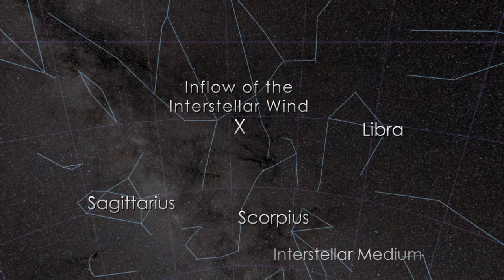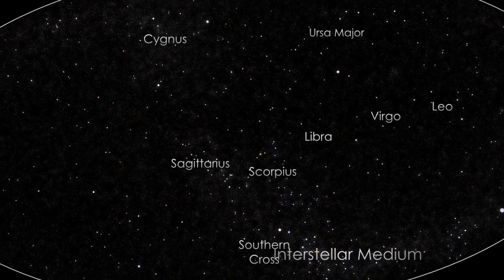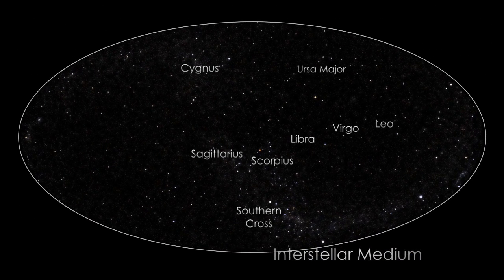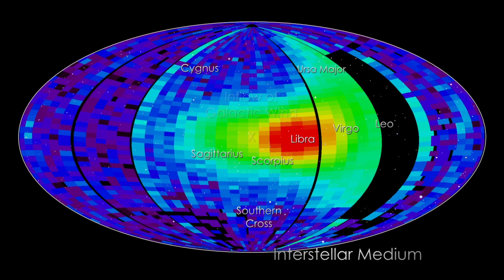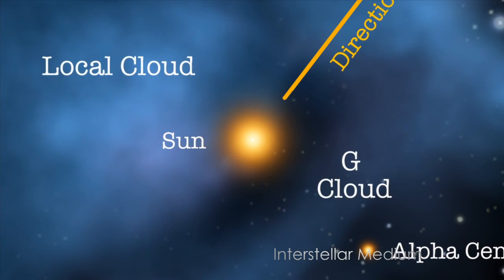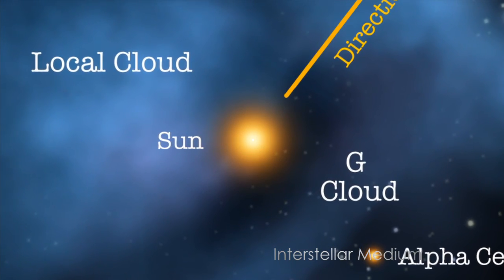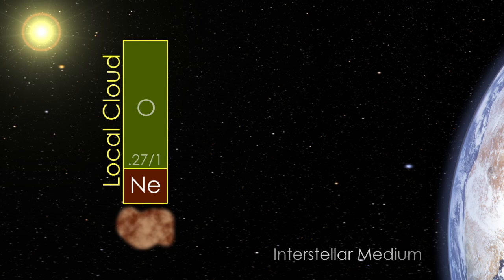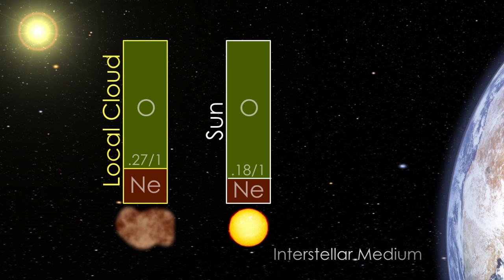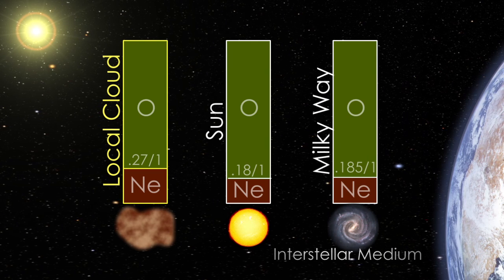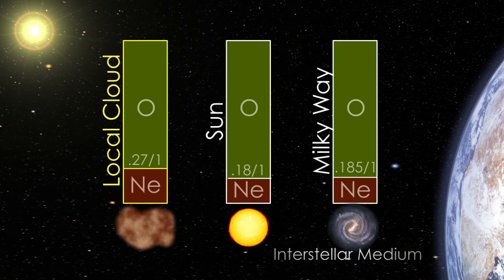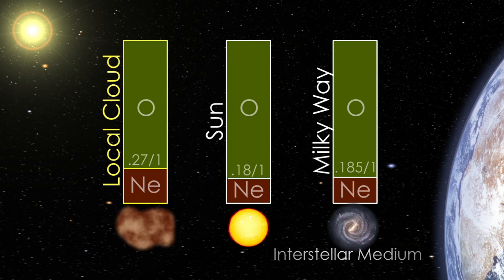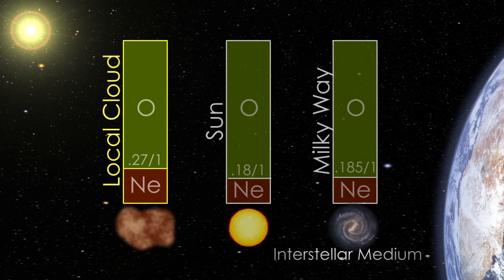IBEX has now made the first direct measurements of hydrogen, oxygen, and neon from outside the solar system. The measurement of these atoms has enabled scientists to get a better grasp on the environment around our solar system. The speed of the galactic wind registered around 52,000 miles per hour. Heavy interstellar atoms show a difference from the solar system and galaxy as a whole. This puzzle may mean that the Sun has moved out of the region where it formed, or that some of the oxygen has been captured by dust in interstellar space.